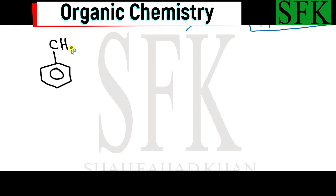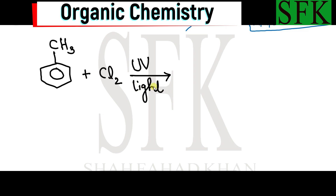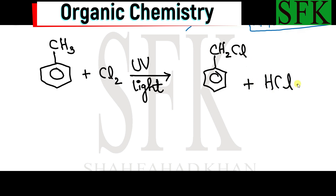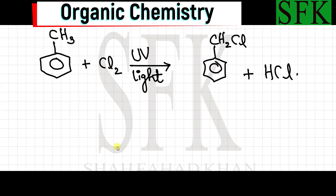The next reaction of methylbenzene is a reaction with chlorine in the presence of UV light — these are the conditions for free radical substitution, as we recall from AS level. A free radical substitution occurs in the side chain of benzene, and one of the hydrogen atoms gets substituted by a chlorine atom, giving CH₂Cl plus HCl as the byproduct. The product is chloromethylbenzene, also called 1-chloromethylbenzene — both names are correct.